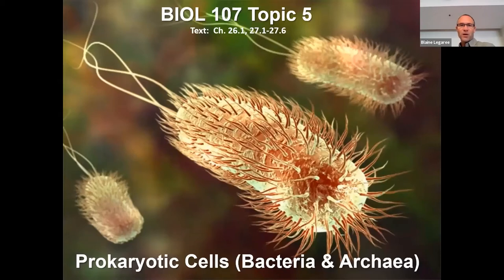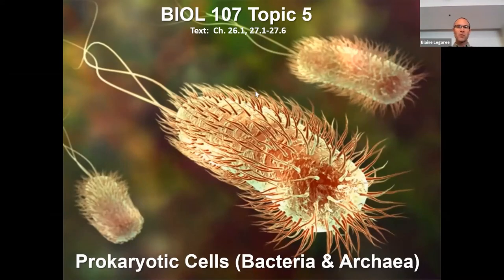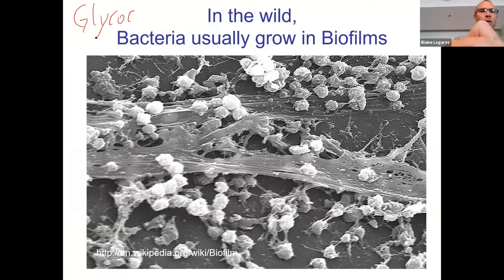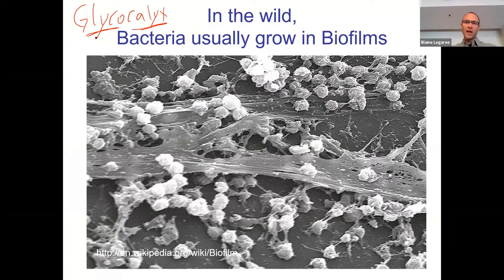So, back to bacteria. Last day we were talking about different bacterial structures and we learned some new words. We're going to continue and talk about some other bacterial structures — I have a Kahoot for you in a couple of minutes. One place we finished off last day was talking about the glycocalyx. Glyco means sugar and calyx means coat, so glycocalyx means sugar coats, and there were two types: capsules and slime layers, which are kind of gooey and slimy because carbohydrates absorb quite a bit of water.